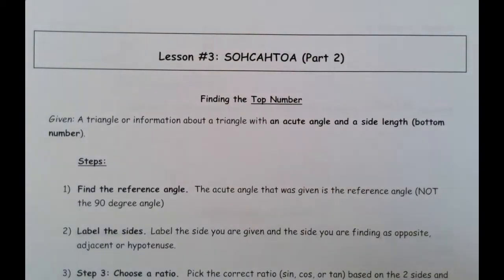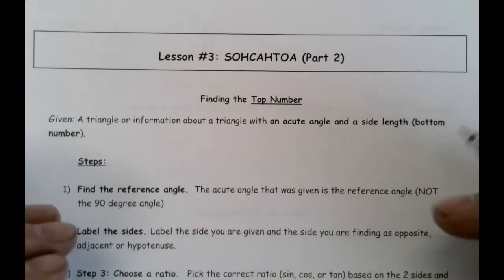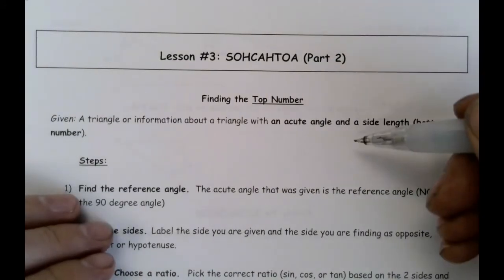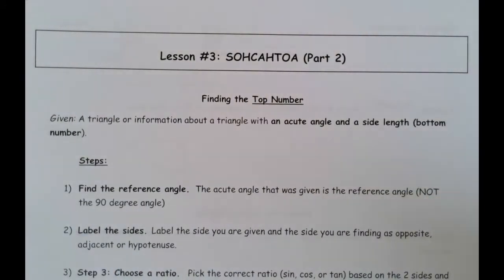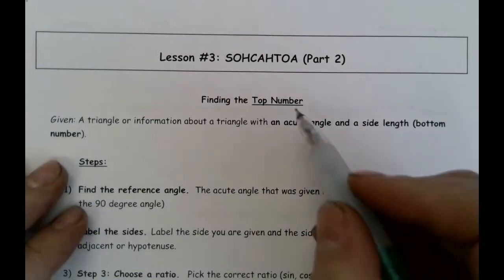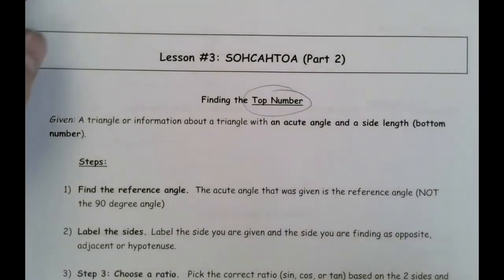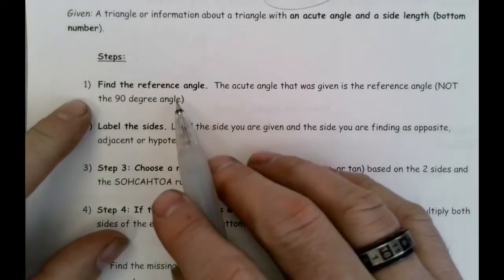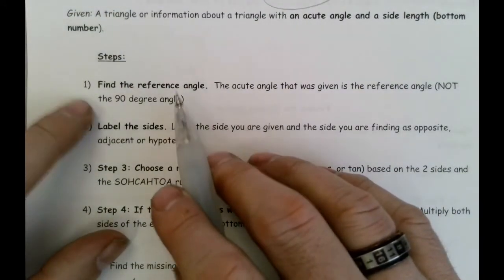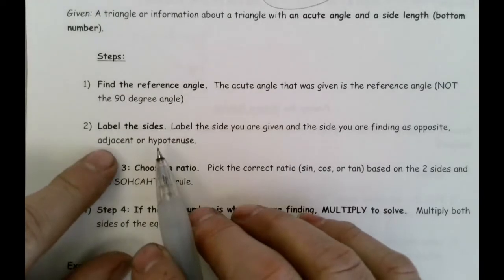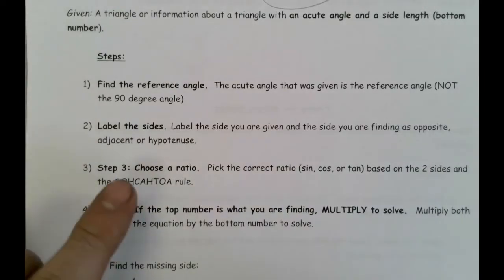In any trig ratio, remember there's going to be a numerator and a denominator. What we're going to do right now is approach this problem as if we are looking for that numerator — whatever the ratio turns out to be. First of all, we identify that reference angle, and then that helps us label the sides: opposite, adjacent, hypotenuse. Then we choose the ratio that corresponds with the information that we have and the information that we're looking for.